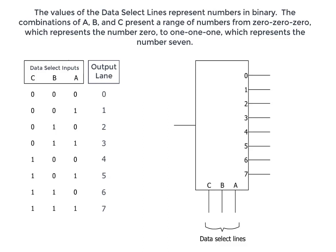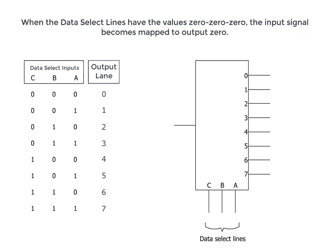The combinations of a, b, and c present a range of numbers, from 000, which represents the number 0, to 111, which represents the number 7. When the data select lines have the values 000, the input signal becomes mapped to output 0.